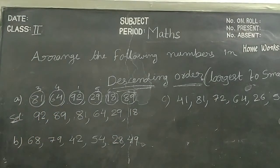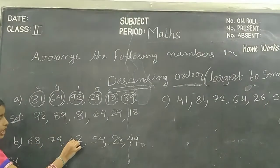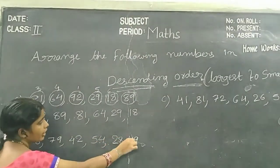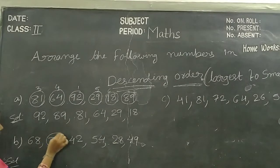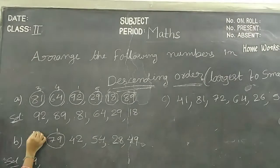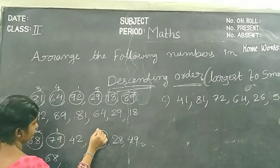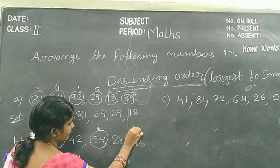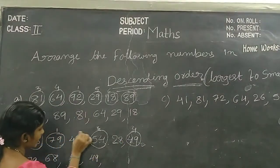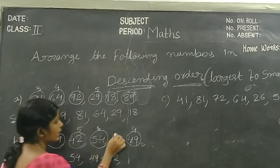Another example: 68, 79, 42, 54, 28, 49. In this example, what is the largest number, children? 79. Next number is 68. Next is 54. Next is 49. Next is 42. Next is 28.